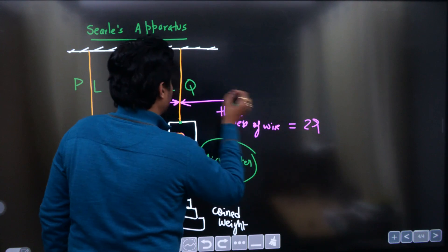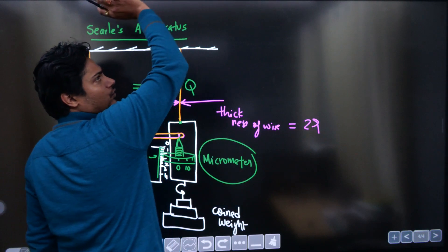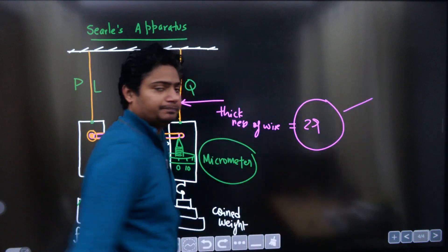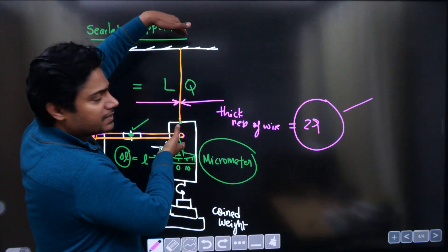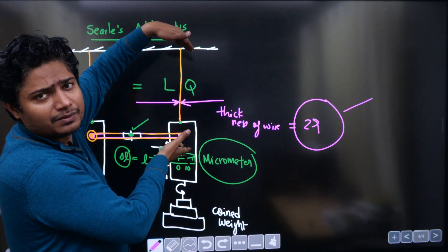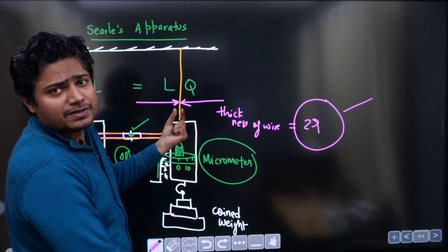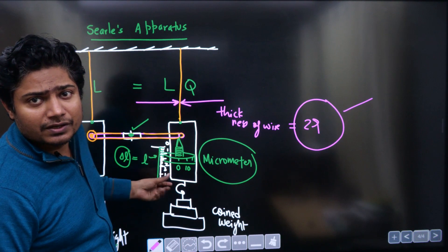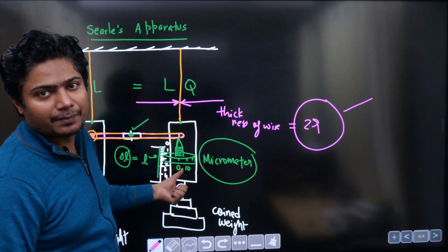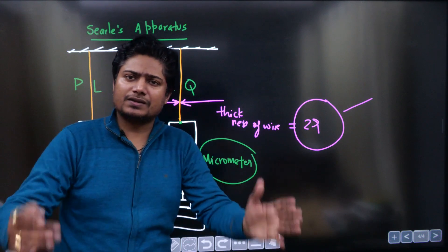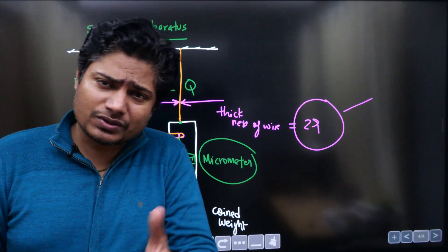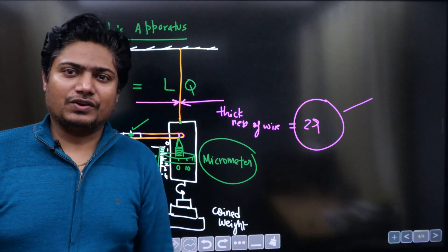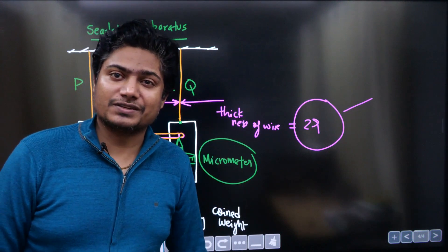The wire thickness (giving 2R) is measured by a separate screw gauge. To summarize: the original length is measured using a normal meter scale in millimeters; the thickness is measured using a screw gauge; and the change in length is measured using the micrometer attached to the Searle's apparatus. Now let's do some problems to find M, delta L, L, and all values to determine Young's modulus.